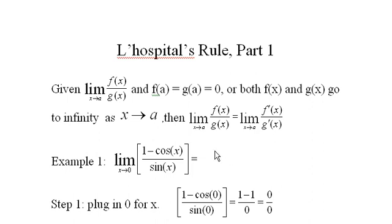For example, if we have a limit of 1 minus cosine x over sine x as x heads to 0, what we're going to get when we just plug 0 in to see what happens is 0 over 0. Well, that's an indeterminate form, and it also satisfies the conditions for L'Hopital's Rule, so we can use L'Hopital's Rule to help find the limit here.